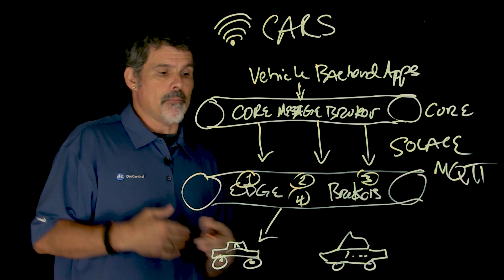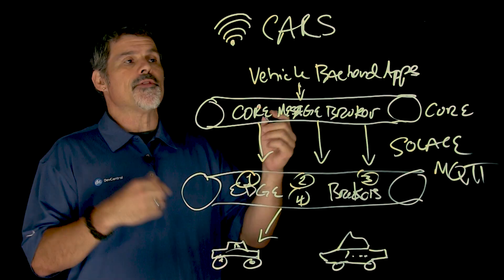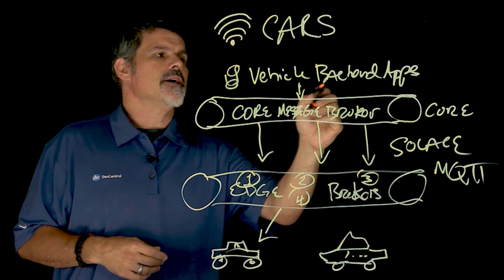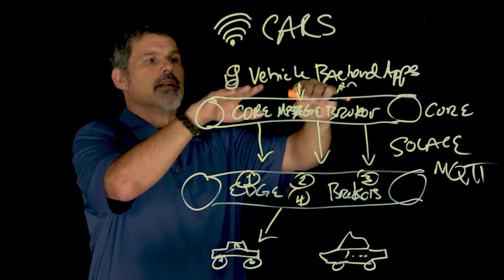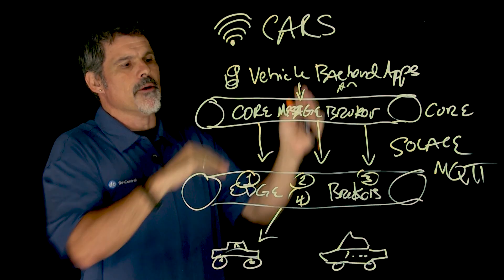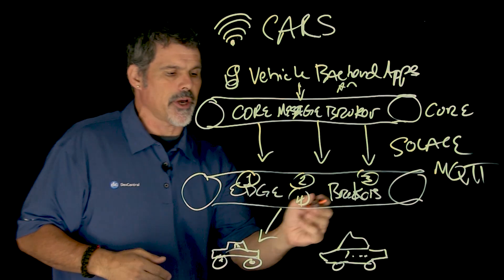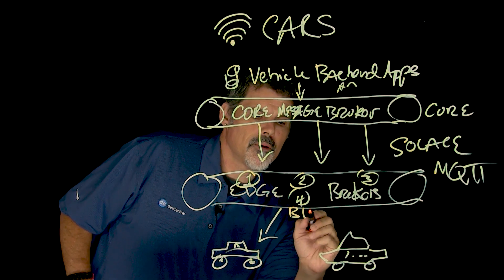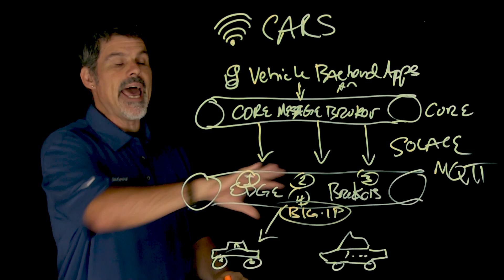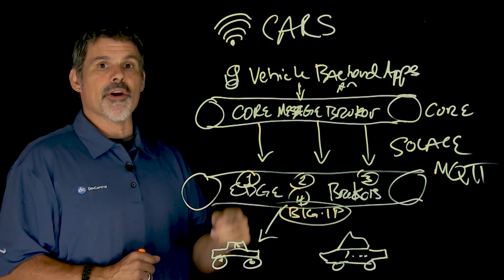And so, where does F5 come in and the big IP? So, usually you think, right, the big IP would sit up here in front of all the applications and doing health and that kind of availability stuff on the back end apps. But in this particular scenario, big IP is actually sitting on the edge and connecting with the cars.